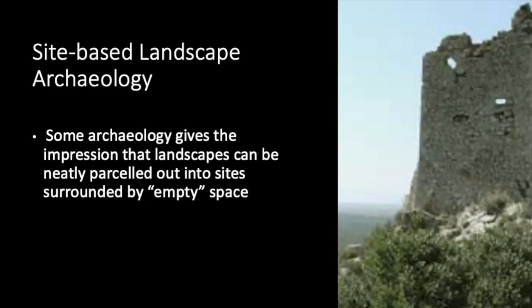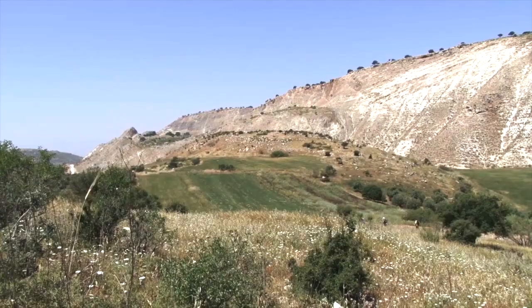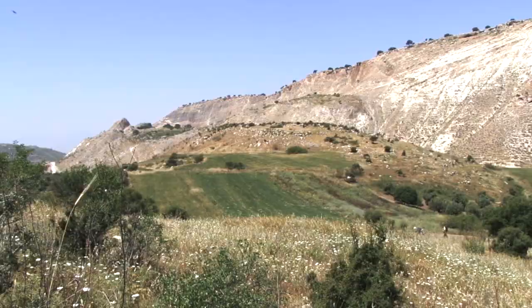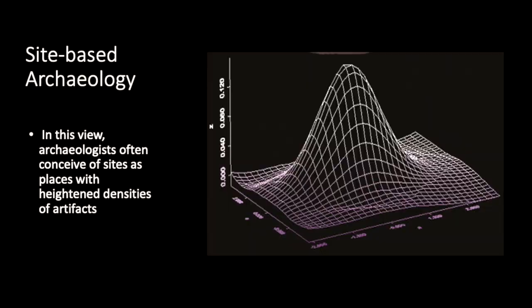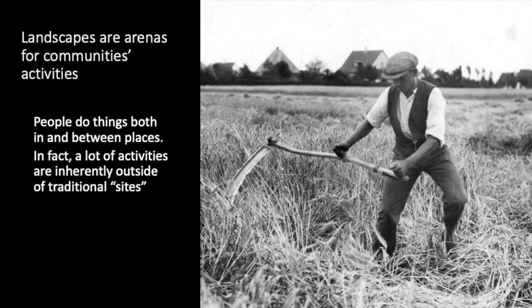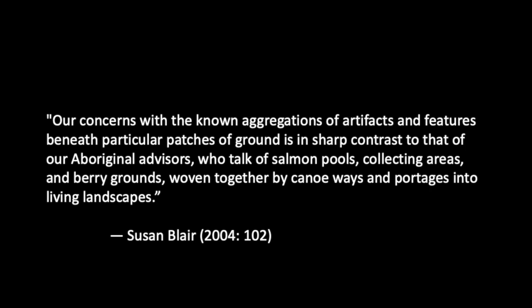Landscape archaeologists also differ in the extent to which they think of human activity as being parceled out into distinct spaces, usually called sites. In some contexts, sites seem to be a reasonable concept — for example, Near Eastern tells, sometimes bordered by large fortification walls, are pretty obviously sites. On the other hand, quite often archaeologists define sites solely on the basis of elevated artifact densities, sometimes even modeling them statistically as with a bivariate normal distribution. But archaeologists also recognize that most of the things that people do are not neatly tied to particular spots on the landscape. As Susan Blair notes, from the perspective of the people who lived in these ancient landscapes, salmon pools, collecting areas, and the pathways between them can be more important than campsites and villages.